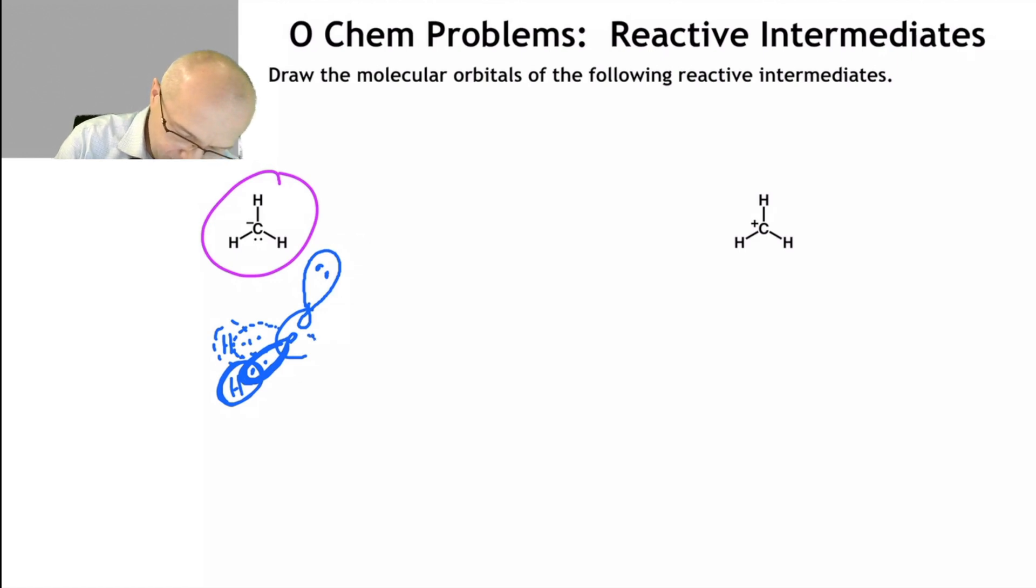And here is the other sp3 orbital going over like that. Let's see if I can do a little better. Well, not much - I tried my best. There you go. And of course that carbon is negative, don't forget. So the lone pair on the carboanion is in an sp3 orbital.